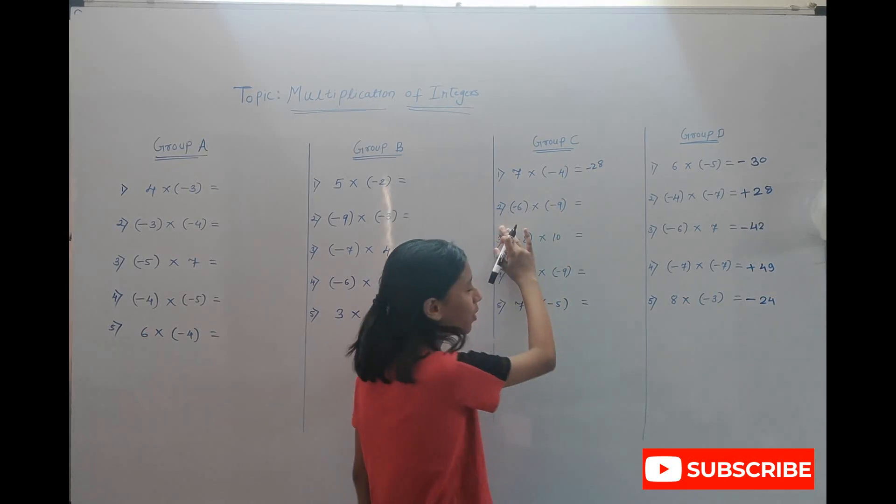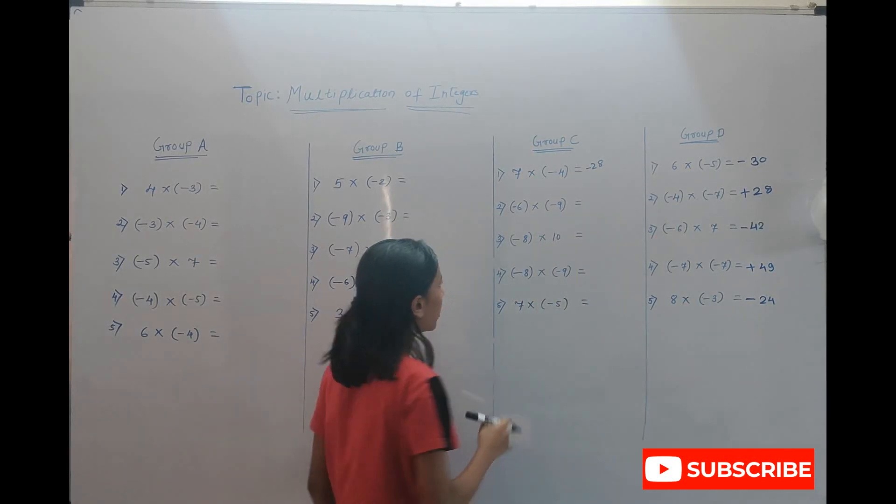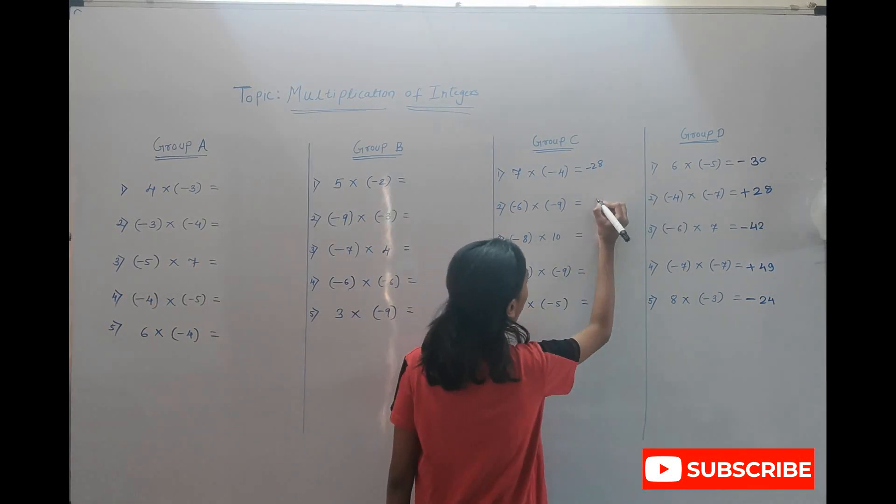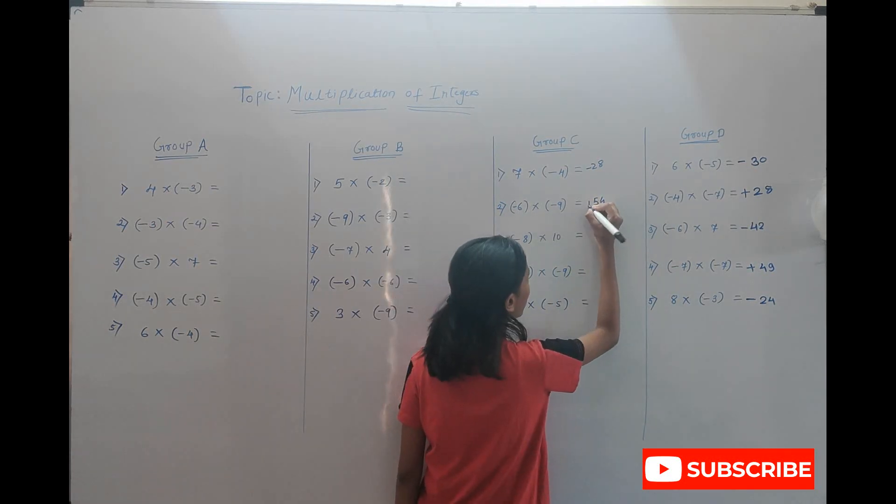Question number two: six multiplied by nine. The answer is fifty-four. The two signs are the same, so we have to give it a plus.